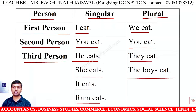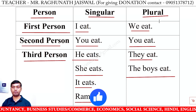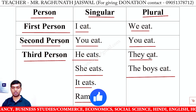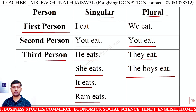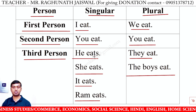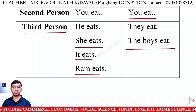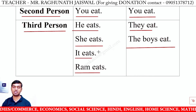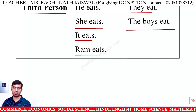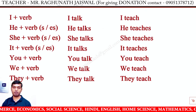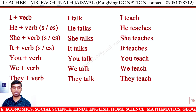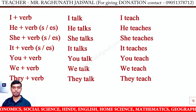यहाँ पर एक चीज़ notice करिए — plural में verb के साथ कुछ नहीं है। Singular में जब third person रहता है — He, She, It — तब verb के साथ S का form आता है। यह concept हमने आपको यहाँ बताया है।